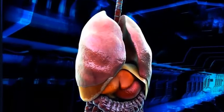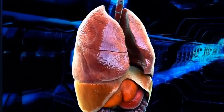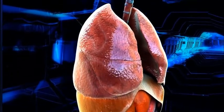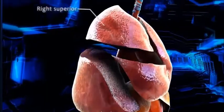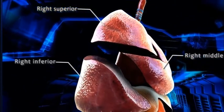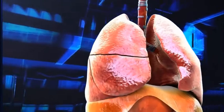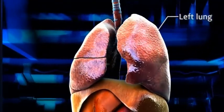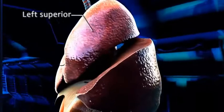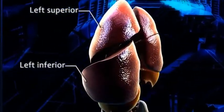Present within the rib cage are the pleural membranes which enclose the lungs. The right lung is divided into three lobes: the right superior, right middle, and the right inferior lobe. The left lung is smaller and has only two lobes, the left superior and the left inferior lobe.